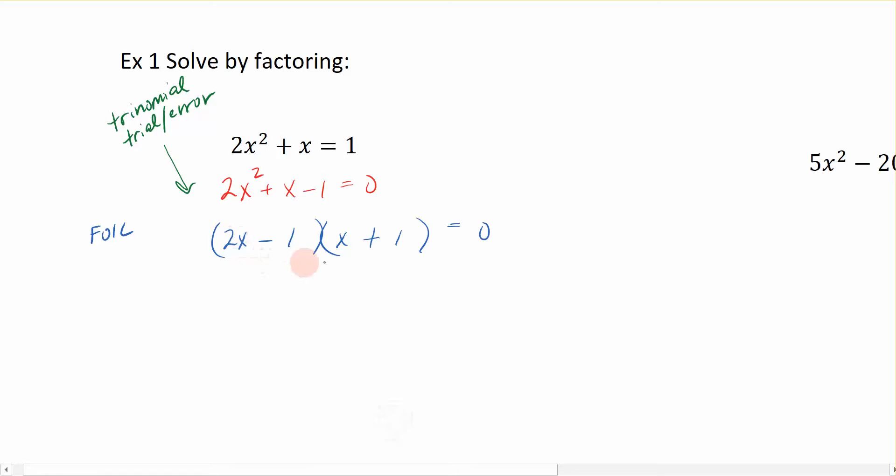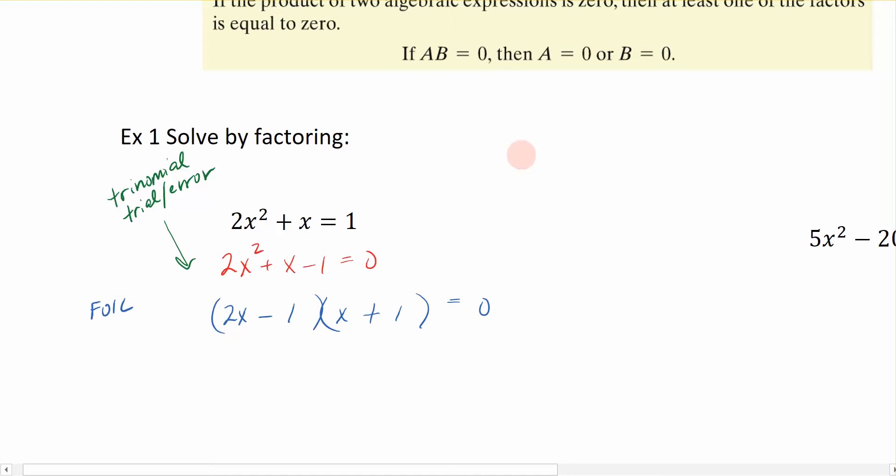So I have my signs wrong. So let's just go in and change the signs. Check our middle terms. This time I have plus 2 minus 1. That does give me back the 1 I need. So I know that I have this factored right and I can move on by applying the zero product principle.